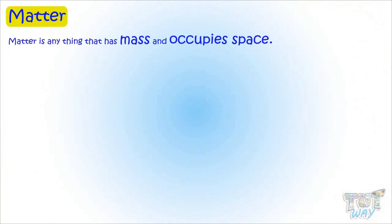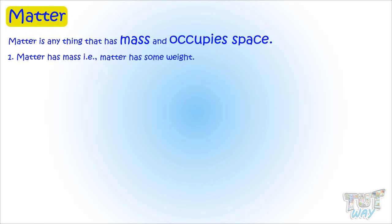The definition of matter is: matter is anything that has mass and occupies space. Now let's understand this definition. First point is, matter has mass — it means matter has some weight. Second point is, it occupies space — it means matter needs space.